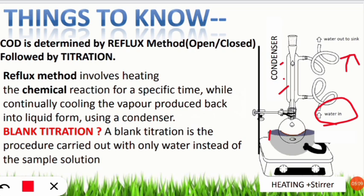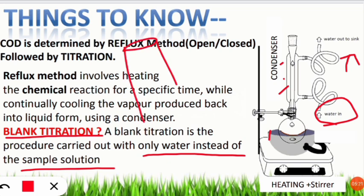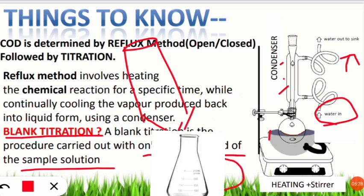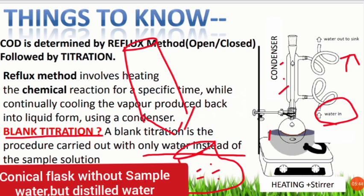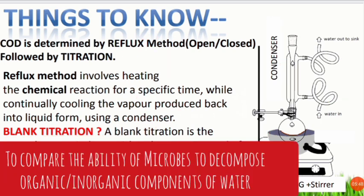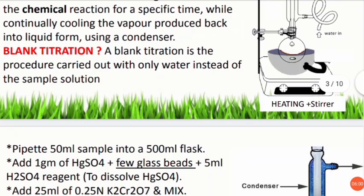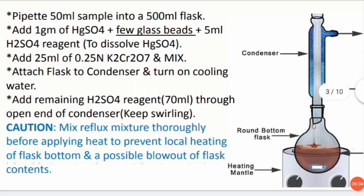Blank titration means a titration in which only water is taken instead of the sample solution. In normal titration, we take a compound in the burette and the sample in the conical flask with reagents and indicator. In blank titration, we take distilled water — not the sample water — in the conical flask, adding all the same reagents. This is done to compare the ability of distilled water versus the collected water sample to decompose organic and inorganic components.